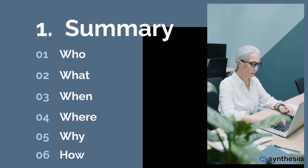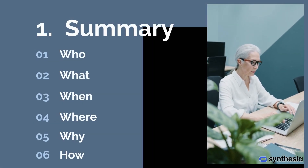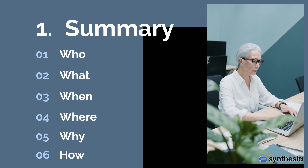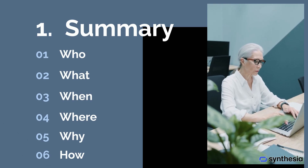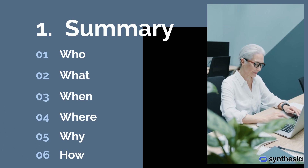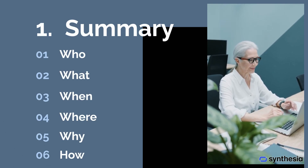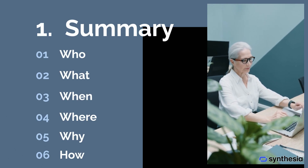1. Summary. A summary lead is the most common type used in news writing. It provides the most important information right away, answering the who, what, when, where, why, and how — the five W's and H — in a concise manner. This type of lead is usually straightforward and gives readers a quick understanding of the key facts.